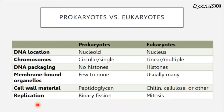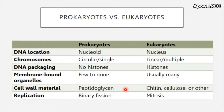This slide is a repeat of information we've seen before, again comparing prokaryotes to eukaryotes. They differ in their DNA location, their chromosomes, how many copies they usually have and the shape of them, the way their DNA is packaged either with or without proteins, and the membrane-bound organelles. Prokaryotes tend not to have any membrane-bound organelles whereas eukaryotes always have many, including the nucleus. The types of material in the cell walls differ too — prokaryotes have peptidoglycan and eukaryotes lack peptidoglycan but have others like chitin and cellulose. Replication is through binary fission for prokaryotes and mitosis for eukaryotes.